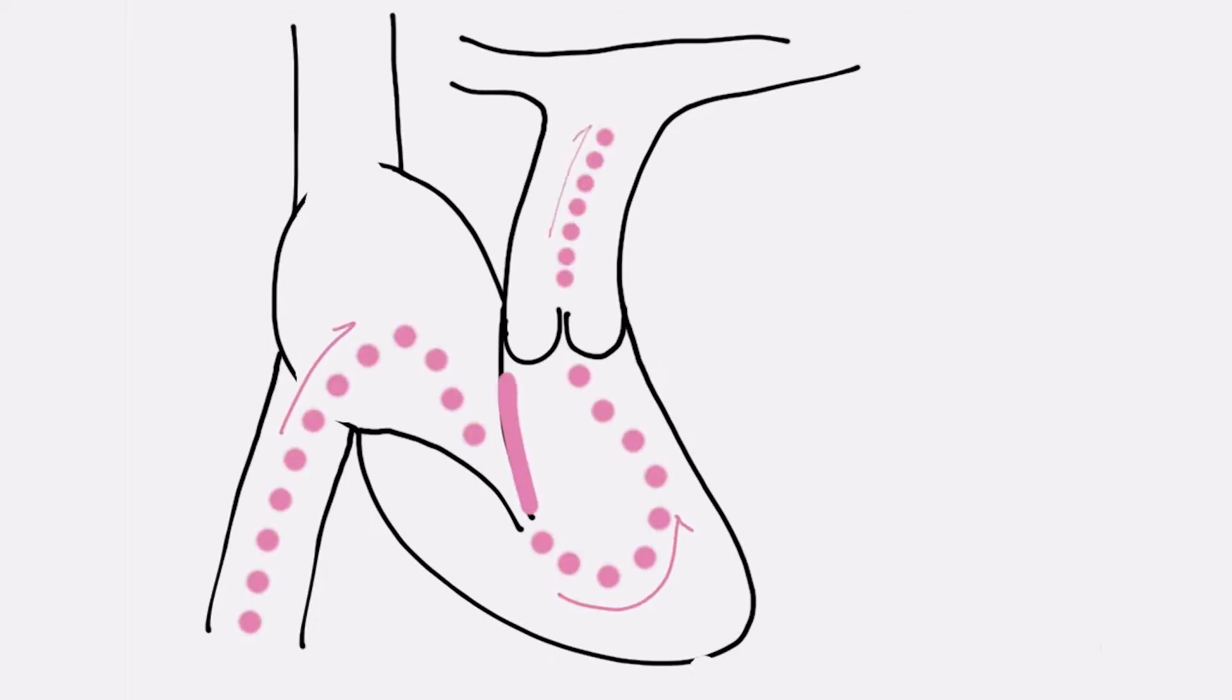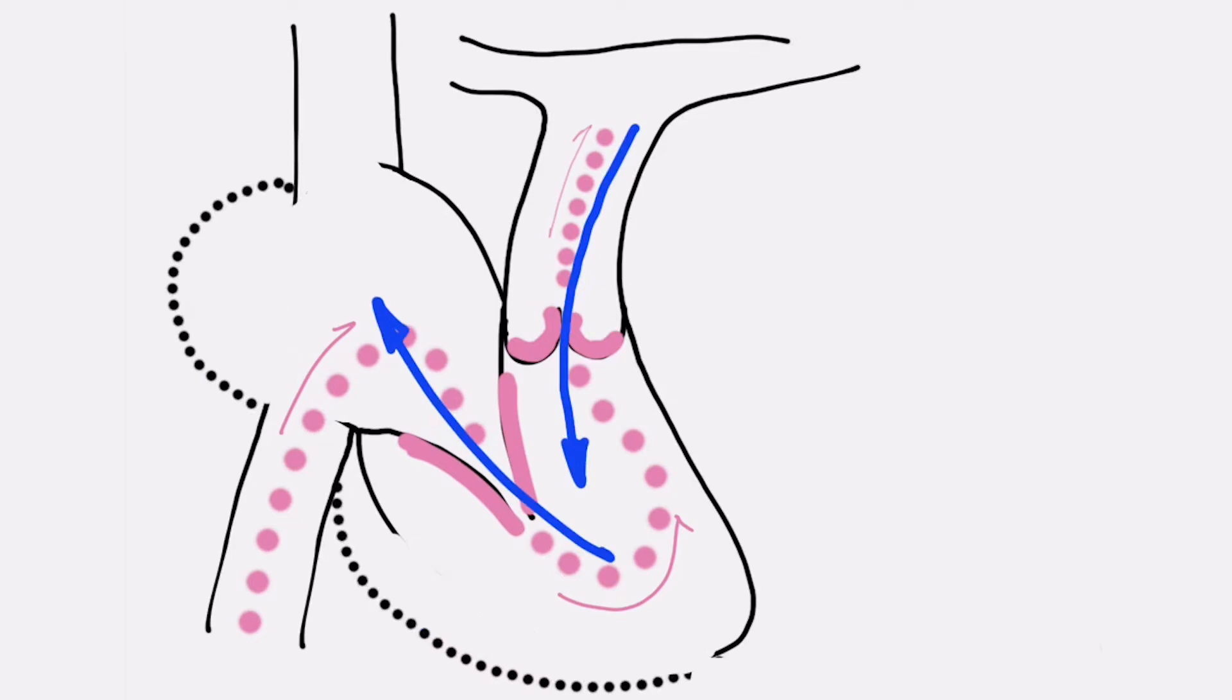These valves become thickened and abnormal and don't function normally causing leaking of the two right-sided heart valves with subsequent enlargement of the chambers as demonstrated here. With long-standing severe leakage, the right heart enlarges and the function deteriorates and patients can develop symptoms.